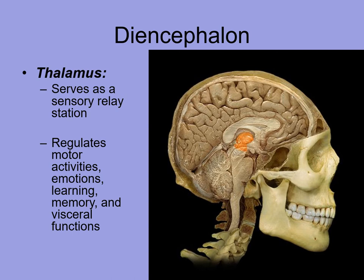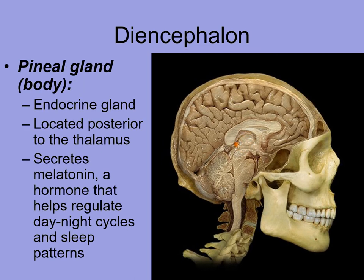The diencephalon has several different components or subgroups within it. First, the thalamus, highlighted here, serves as basically a relay station. A lot of nerves pass through here — sensory nerves will pass through — and it helps to regulate various motor activities, emotions, memory, and learning.